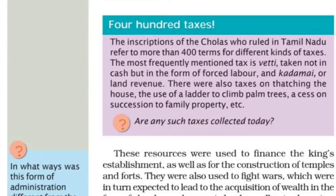The inscriptions of the Cholas, who ruled in Tamil Nadu, refer to more than 400 terms for different kinds of taxes. The most frequently mentioned tax was Vetti, taken not in cash but in the form of forced labor, and Kadamai, or land revenue. There were also taxes on thatching the house, the use of a ladder to climb palm trees, and on succession of family property.